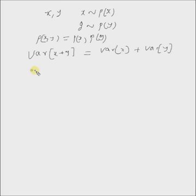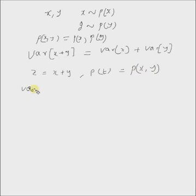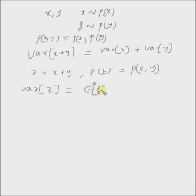So, let us define a new random variable z, which is the sum of these two variables x and y. Now, we can say that the probability of z is given by the probability of x comma y, that is the joint distribution of x comma y. So, the second centralized moment of z is given by the variance of z, which is equal to expectation of z squared minus expectation of z, whole square.